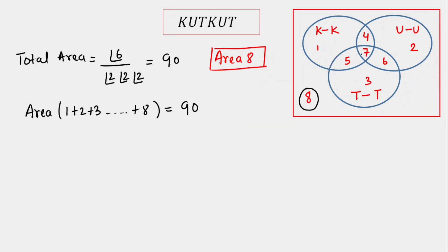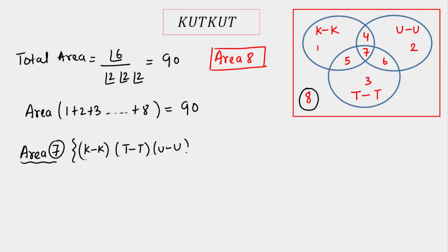Now I will calculate area 7, where KK, UU, and TT are all together simultaneously. I treat KK as one unit, TT as one unit, and UU as one unit. That gives us 3 units to arrange, so area 7 = 3! = 6.